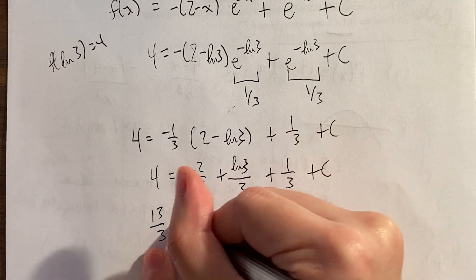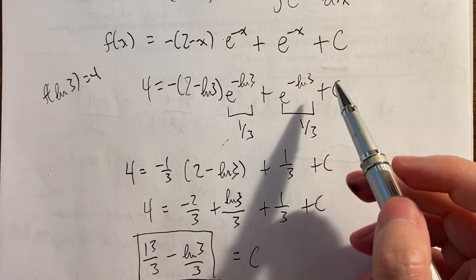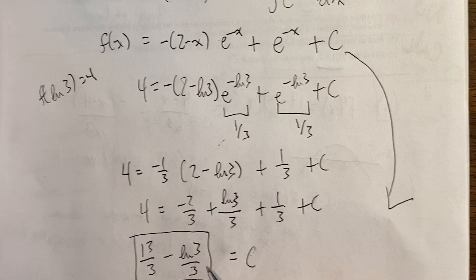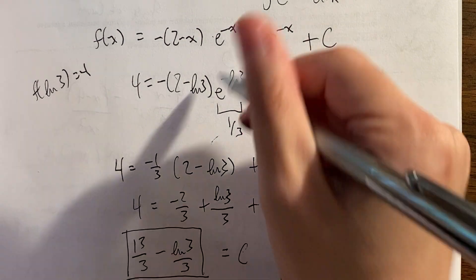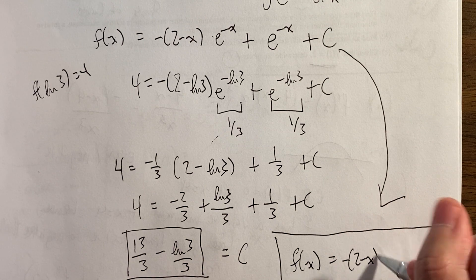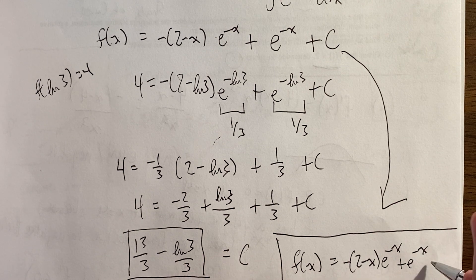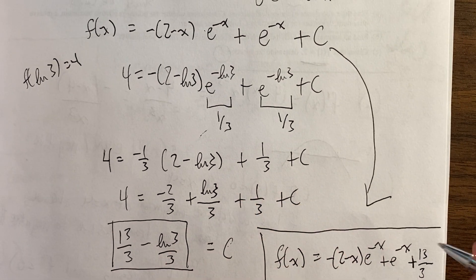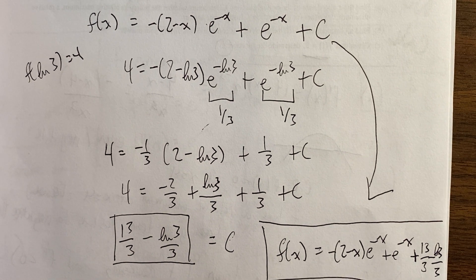Replace C in the formula: f(x) = −(2−x)e^(−x) − e^(−x) + 13/3 − (ln3)/3. That is the final answer. It's a bit messy because of the ln(3) initial condition, but we followed the process carefully and are done with this free response question.